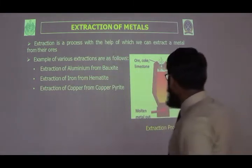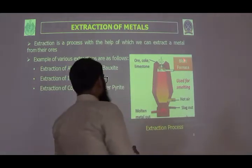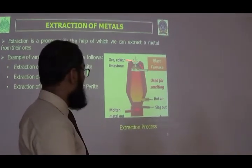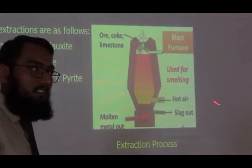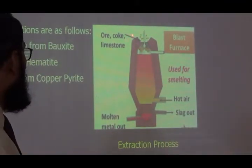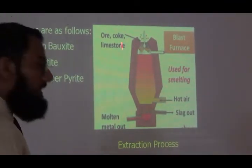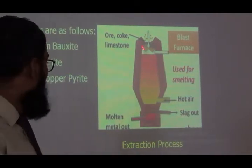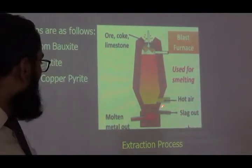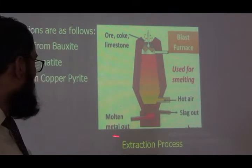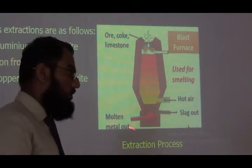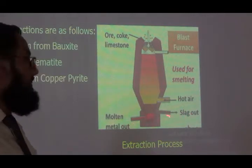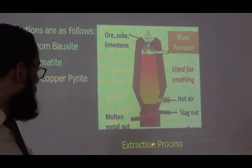Here we have a figure of a blast furnace, which is used for copper extraction. This is the ore of copper, with some other chemicals like coke and limestone. It is heated at high temperature, and the molten form of pure metal copper is obtained. This is the extraction process.